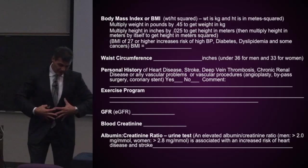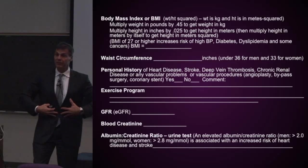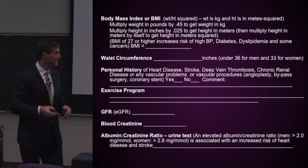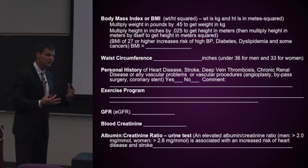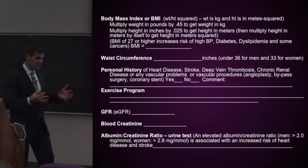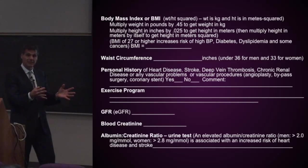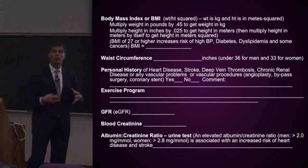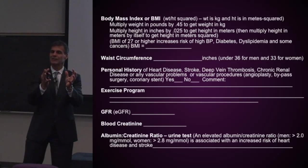And I want a waist circumference. Abdominal obesity is measured easily. If it's a man and their waist circumference is above 36 inches, that spells trouble. For women, the waist circumference most ideally is below 33 inches. Do they have a personal history of any vascular problem or any procedure related to the vascular system — a heart attack, a stroke, a deep vein thrombosis, chronic renal failure, kidney disease, angioplasty, bypass surgery, or a coronary stent? If they say yes to any of those things, they're already in a super high-risk category.